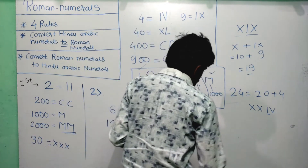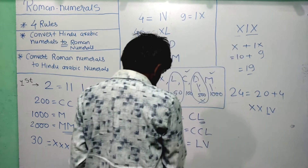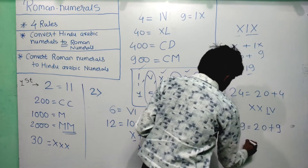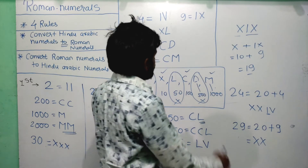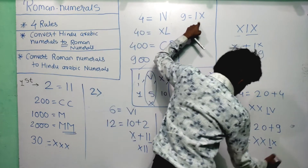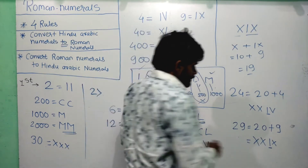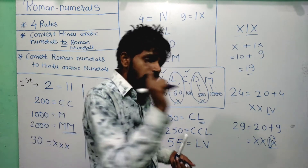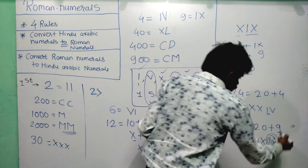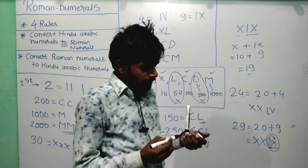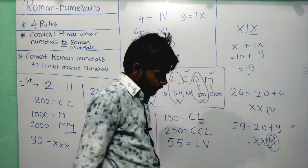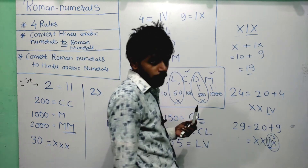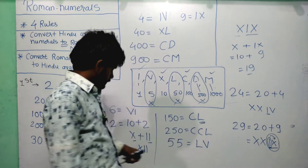For 29: expand as 20 plus 9. Write XX for 20, then IX for 9. Combined: XXIX. Again I is between two greater numerals X and X. Separate as XX plus IX: 20 plus 9 equals 29. If a smaller numeral is between two greater numerals, subtract from the right-hand one.